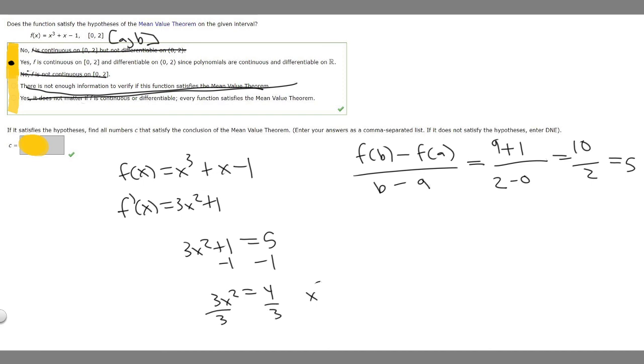So we're going to get x squared is equal to 4 over 3. Now we can square root both sides. That will give us x equals the square root of 4 over 3. So this right here is going to be the answer. So c is going to be equal to this, so we have c equals the square root of 4 over 3.